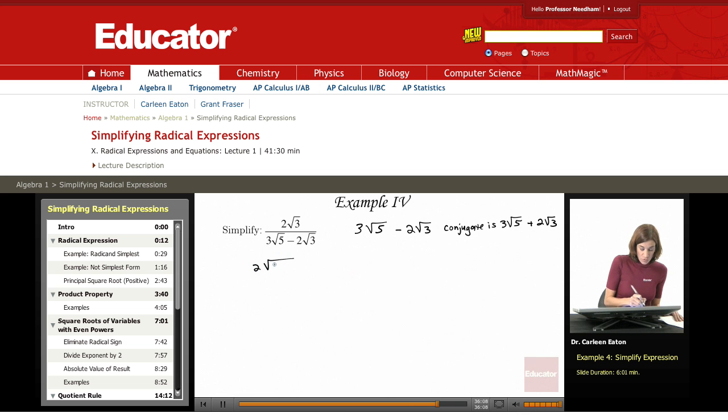Rewriting the expression we're given, all you have to do now is multiply both the numerator and the denominator by this conjugate, 3√5 plus 2√3.